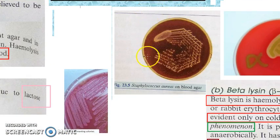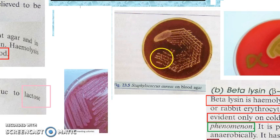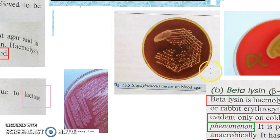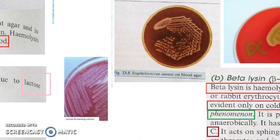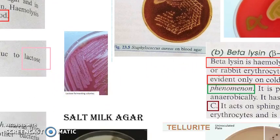On blood agar, there will be beta type of hemolysis — that much is enough to know. On McConkey agar, you will have pink color.